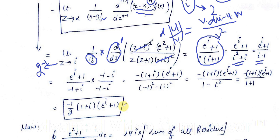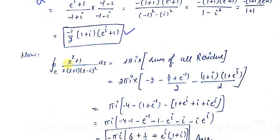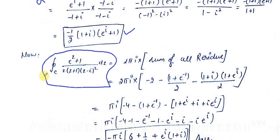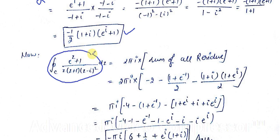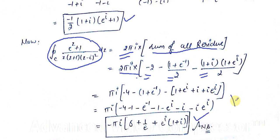Now we calculate the full integral using the Residue Theorem: the integral equals 2πi multiplied by the sum of all residues — the residue at z = 0 (which is −2), the residue at z = −1, and the residue at z = i. Multiplying by 2πi gives the final answer. This was the 15-mark question from the UPSC Mains December 2015 examination.